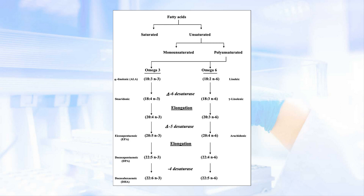Delta-6 desaturase is impaired by aging, alcohol, nutrient deficiencies, trans fats, and elevated cholesterol. As the omega-6 to omega-3 ratio climbs above 5 or greater, delta-5 desaturase is tied up by excess omega-6. The omega-6 linoleic acid, processed through delta-6 desaturase, an elongase, and delta-5 desaturase, yields arachidonic acid — the substrate for cyclooxygenase and 5-lipoxygenase — resulting in an increased risk of heart disease and cancer.